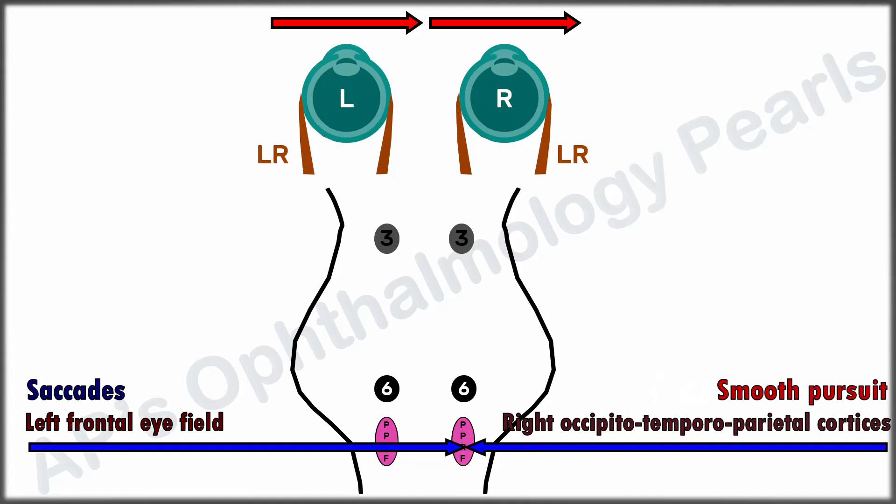The PPRF then sends a signal to the ipsilateral abducens nucleus, which has two types of neurons. The larger motor neurons project to the abducens nerve, supplying the ipsilateral lateral rectus, in this case the right lateral rectus.